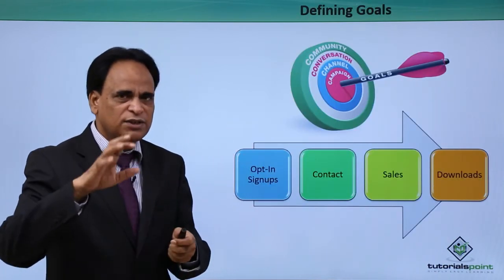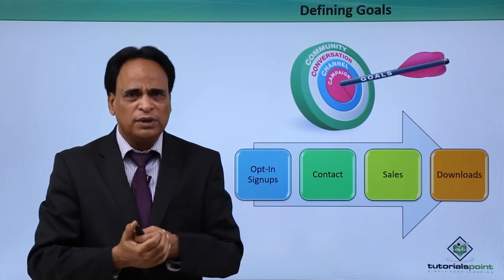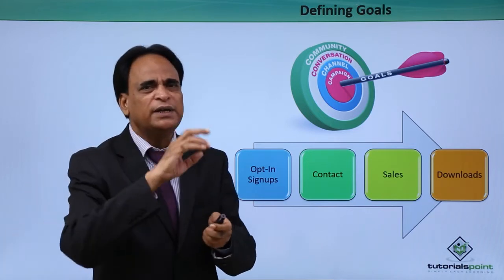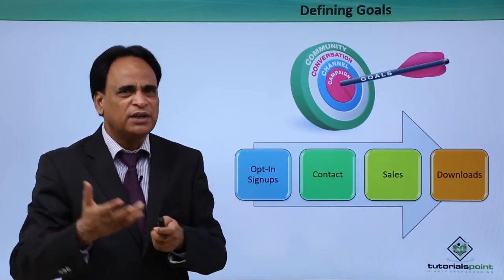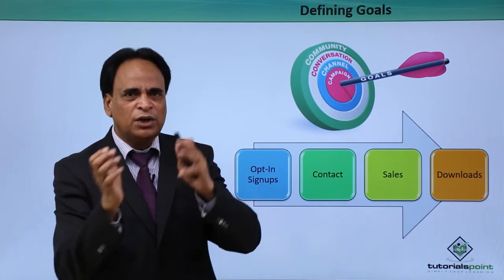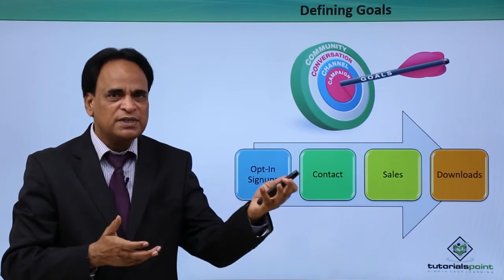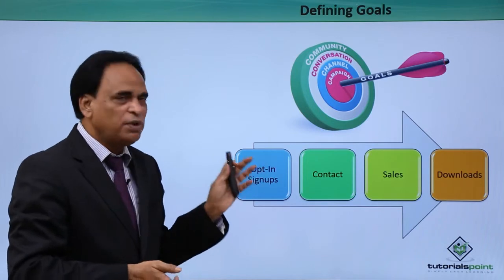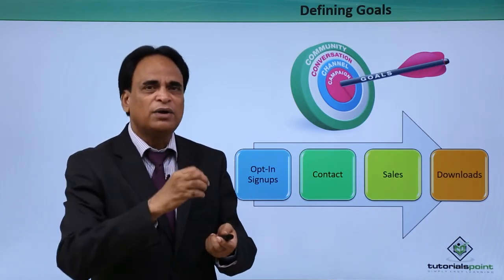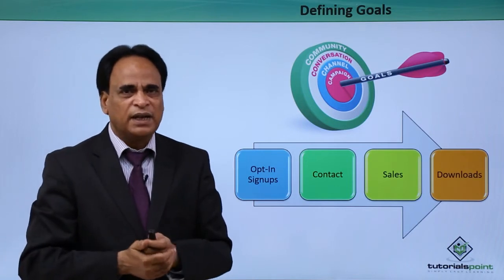How you define goals for social media marketing campaigns affects metrics and ROI. One goal could be sign-ups — building a database of potential customers to interact with through email marketing. That is an opt-in: driving traffic from social media to your site where a registration form is available. Another goal could be contact — having people come from social media to your website and fill up a contact form.